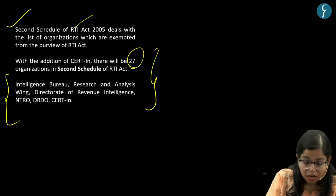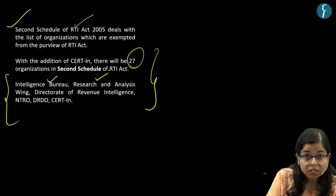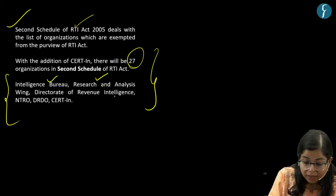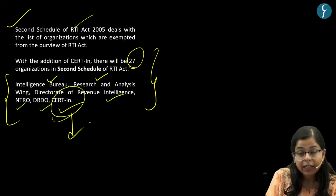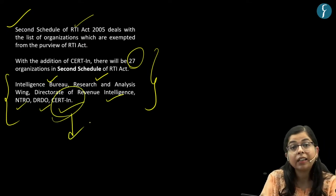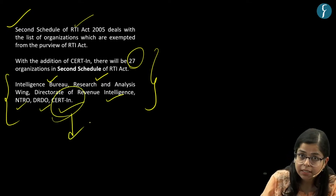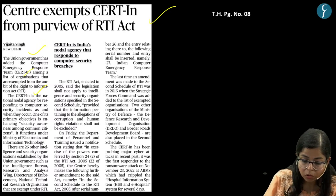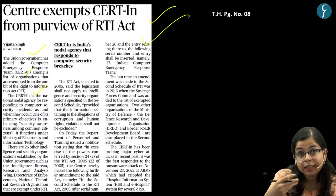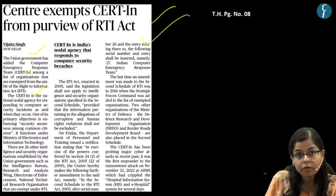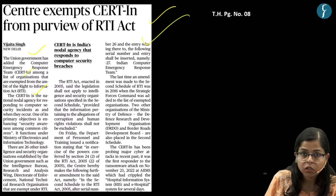Important organizations exempted from the purview of the RTI Act include the Intelligence Bureau, RAW (Research and Analysis Wing), Directorate of Revenue Intelligence, NTRO, DRDO, and CERT-IN. CERT-IN is the latest addition in this list, and this was the news — that CERT-IN is the latest addition to the second schedule of the Right to Information Act 2005.